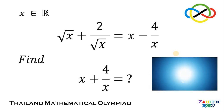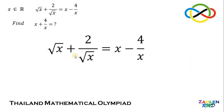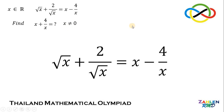Now, let's answer this question together. Our goal here is to solve for the value of x plus 4 over x. Given the equation: square root of x plus 2 over square root of x equals x minus 4 over x. From this equation, we can say that x cannot be equal to 0, because if x equals 0, then 4 over x and 2 over square root of x are undefined. Therefore, x cannot be equal to 0.